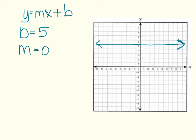Now we are ready to put the equation together. We have y equals 0x plus 5. Now what is 0 times x? We know that 0 times anything is 0. So essentially, you have y equals 0 plus 5, which simplifies to y equals 5.